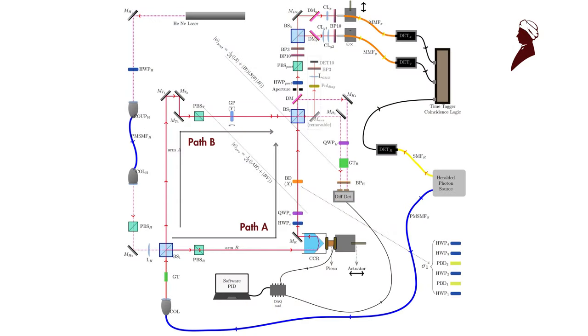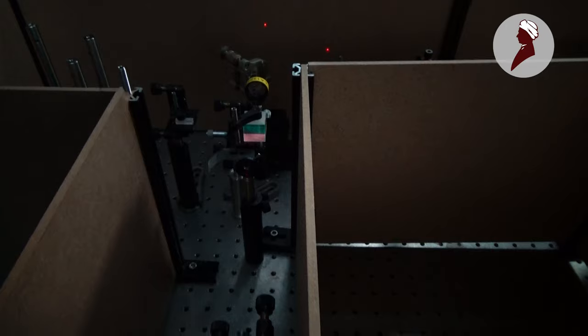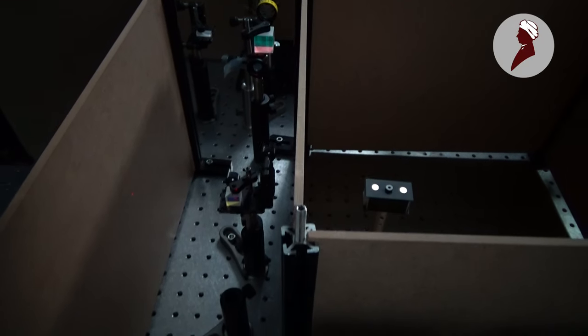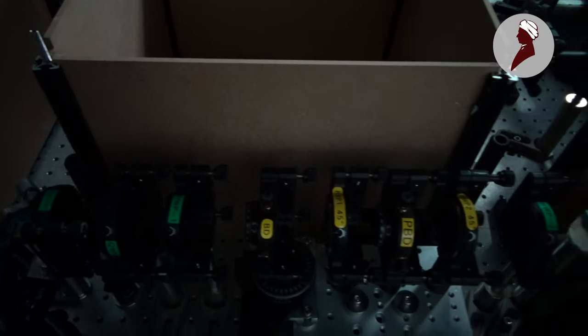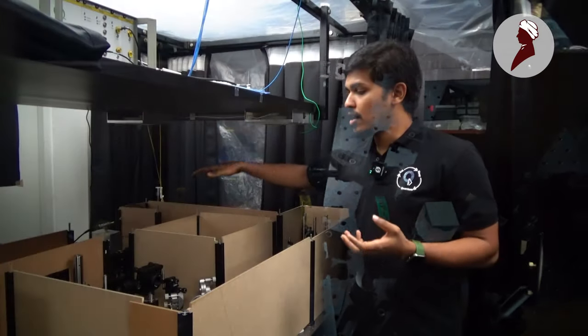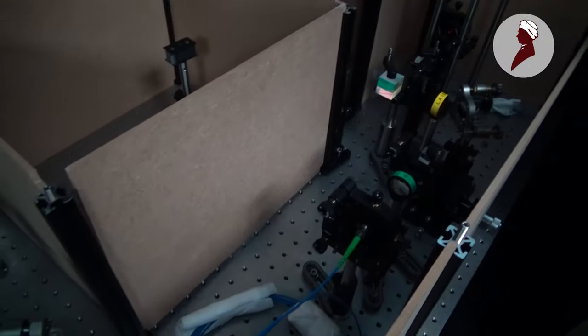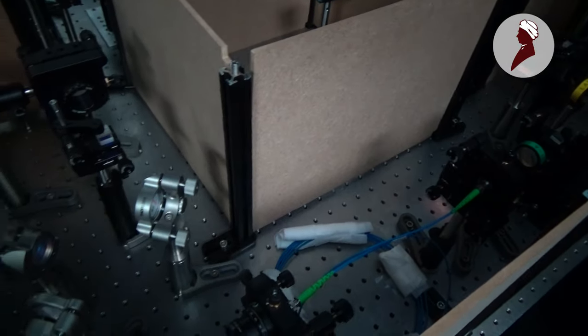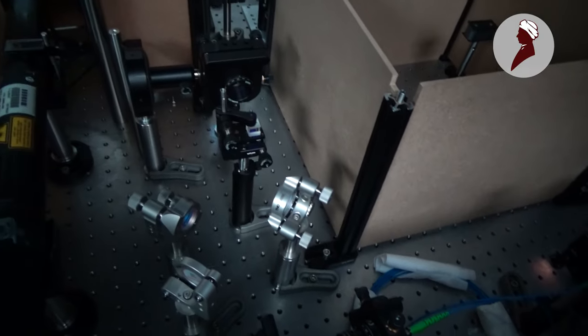Now upon incidenting on the first beam splitter of the Mach-Zehnder interferometer, the single photon takes two different paths inside the interferometer, path A or path B. In path A we have the series of polarization optics like beam displacers and half-wave plates to manipulate the polarization of the single photon. In path B we have a glass square plate which manipulates a spatial degree of freedom of the photon.